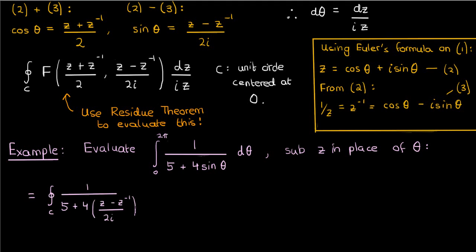which is just sine theta as we showed earlier, times dz over iz, which is just the differential dθ re-expressed in terms of dz as we showed earlier as well. We can then simplify this integral and get the following expression.